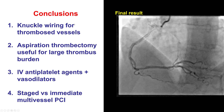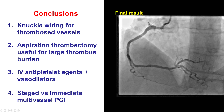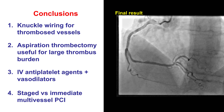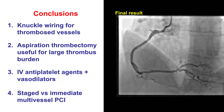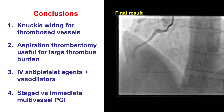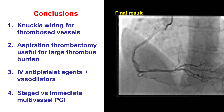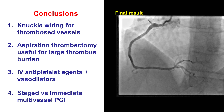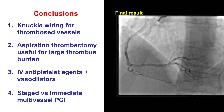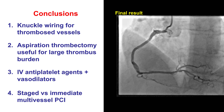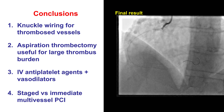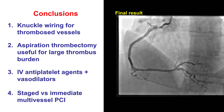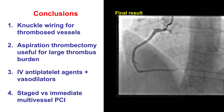Several teaching points from this case. The first is how to wire thrombosed vessels. This case illustrates that using a workhorse guide wire and advancing the tip looped in a knuckle configuration can be a useful and safe way to navigate through an area of thrombus with low risk for perforation. Sometimes a polymer jacket wire like a Fielder FC or SC or Sion Black can be used instead of a workhorse, especially when vessels are calcified.